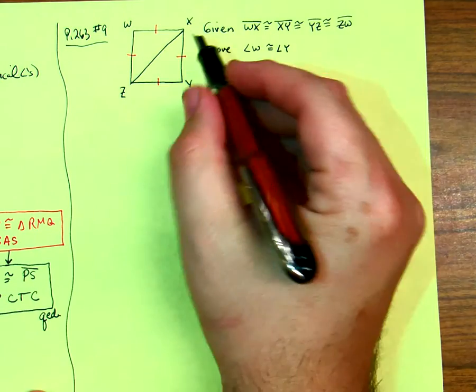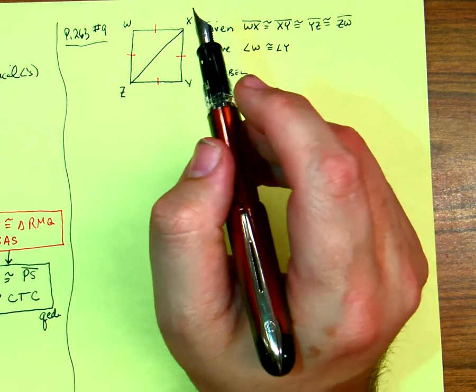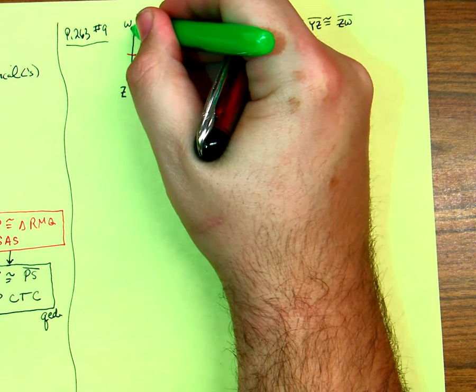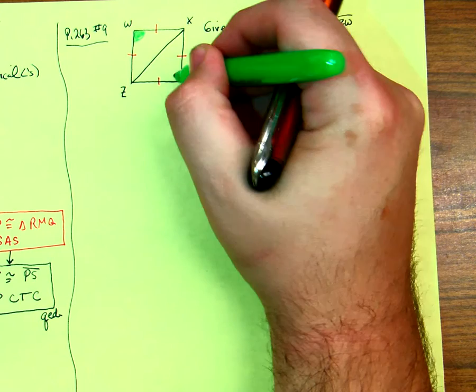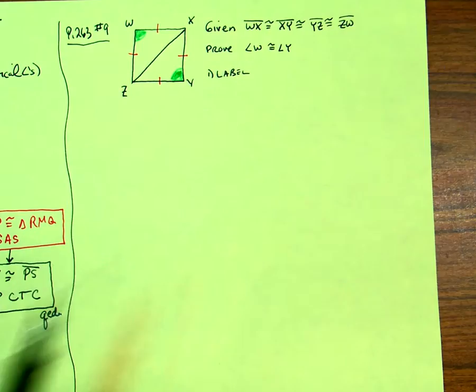And now we want to prove that angle W here... we want to prove that those two angles are congruent to each other.